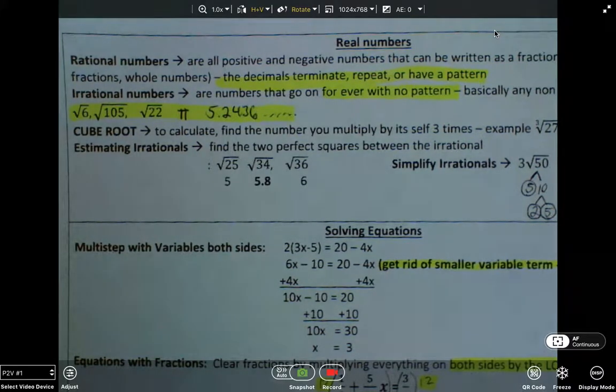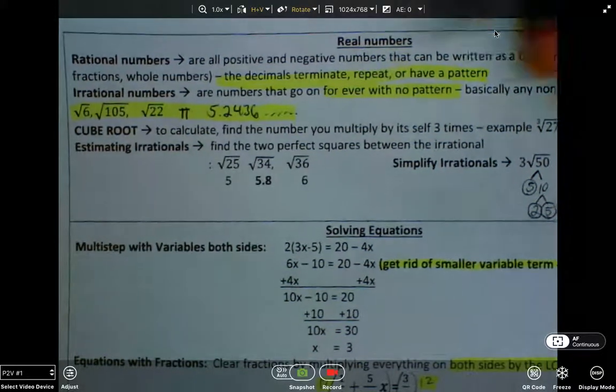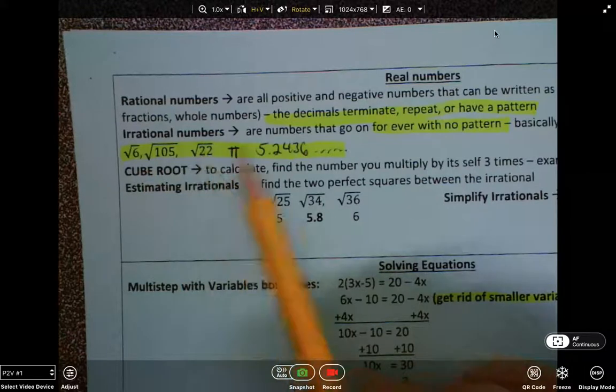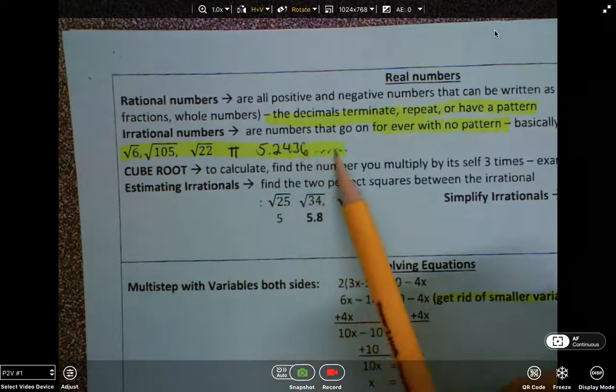The first thing I wanted to share with you was what we learned about rational and irrational numbers. Remember, irrational numbers are numbers that go on forever with no pattern, such as these non-perfect square roots, pi, or numbers that have dot, dot, dots.